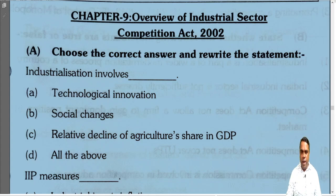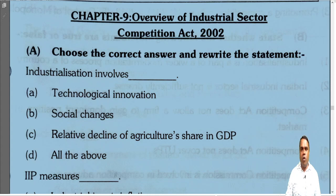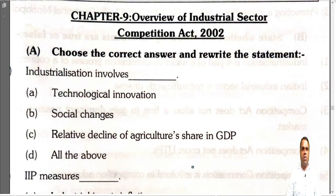Hello students, welcome back. Let's continue with the discussion of MCQs for Module Number 3. Module 3 is related to the industrial sector — covering industries as well as services. Chapter 9 is based on the overview of the industrial sector and the Competition Act of 2002. The first question: choose the correct alternatives and rewrite the statement.